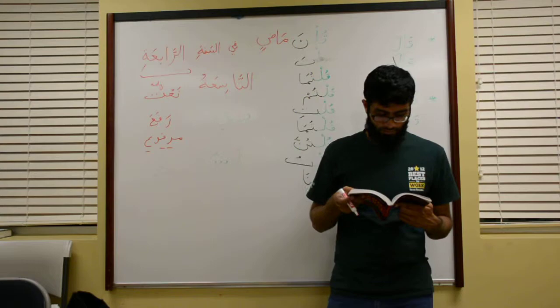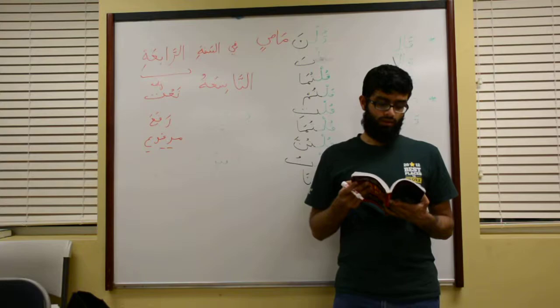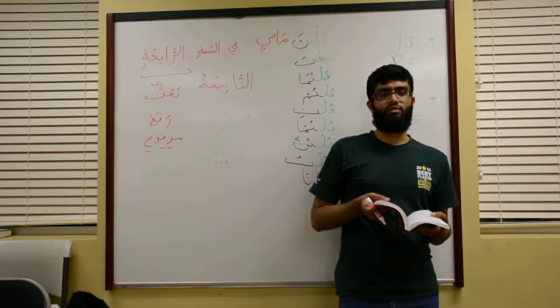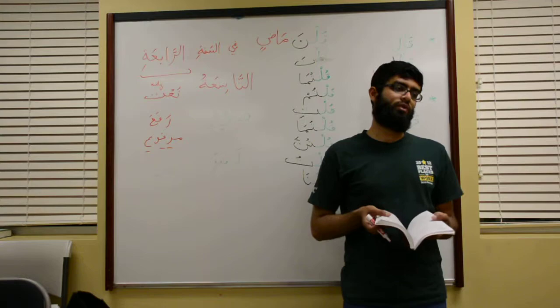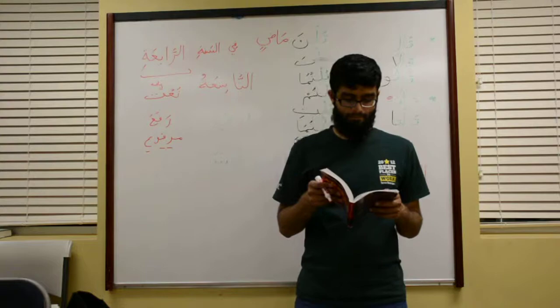Most Arabic verbs have only three letters, which are called the radicals. So 'radical,' 'root,' and 'kalima' all mean the same thing. The basic form of the verb in Arabic is the Madi.